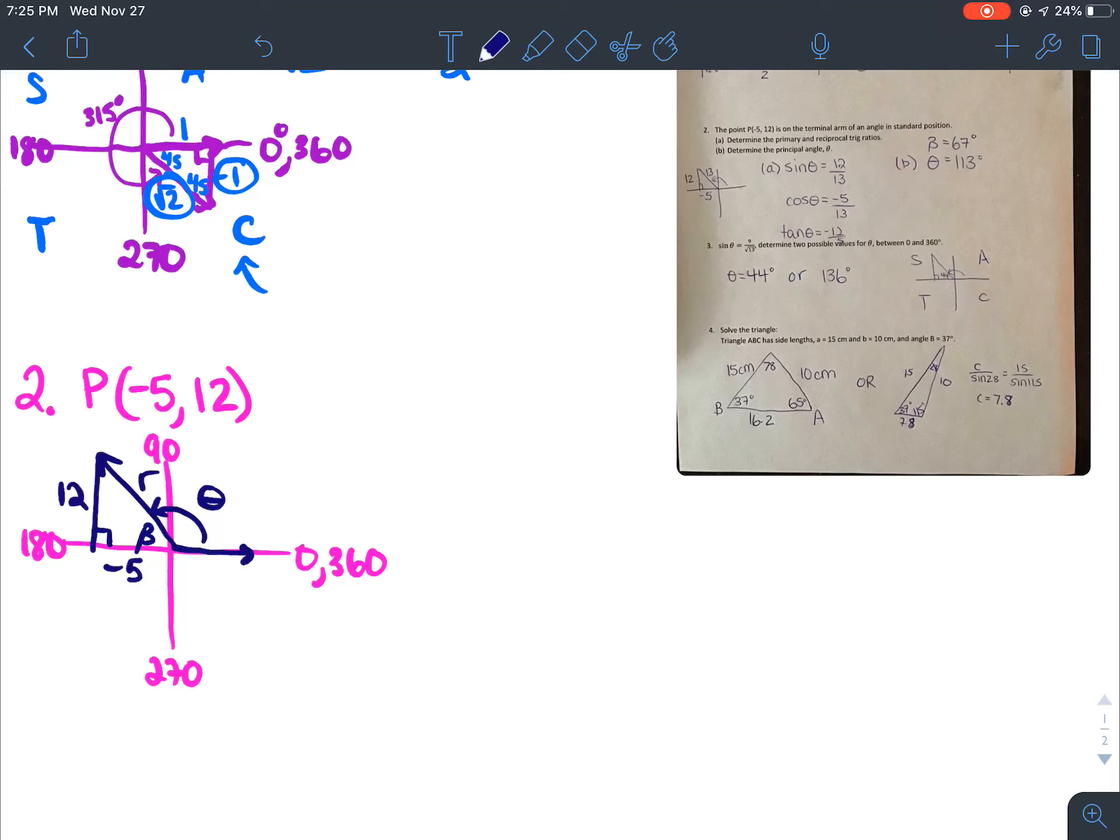we could just do the Pythagorean theorem. So negative 5 squared plus 12 squared. And then we'll get 25 plus 144, which is 169. And then we have to square root it to get R. So R would be 13. So now we know that the hypotenuse is 13.